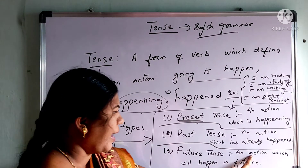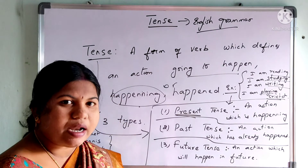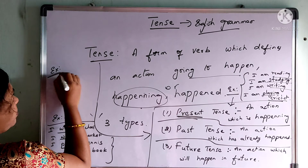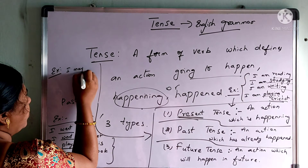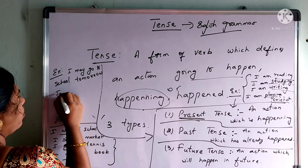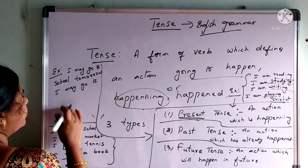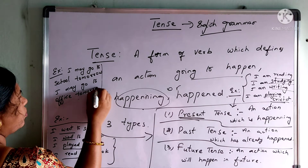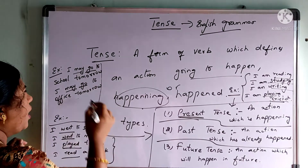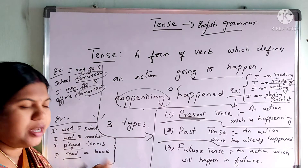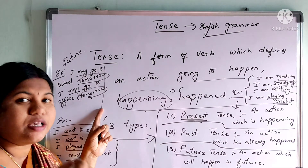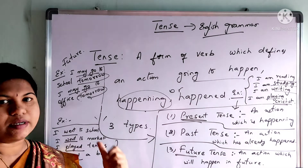The remaining one is future tense — an action which will happen in the future. Till now it didn't happen; we are going to do that action in the future. For example: I may go to school tomorrow, I may go to office tomorrow. Here 'may' indicates it hasn't happened yet. Tomorrow represents the future. Such type of action is called future tense.